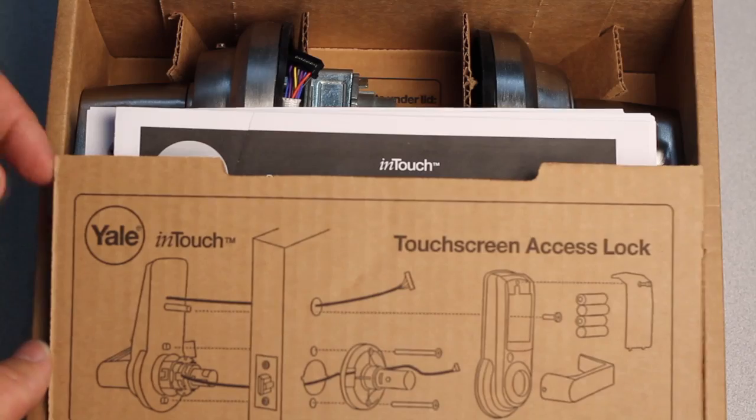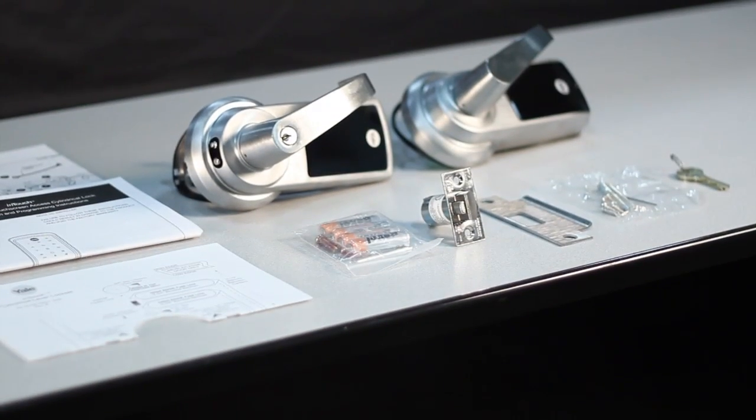With the door prep verified, the lock is now ready to remove from the packaging. Parts as follows should be verified as being in the carton.